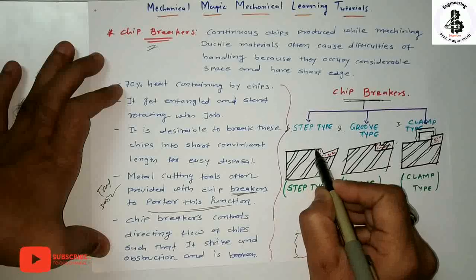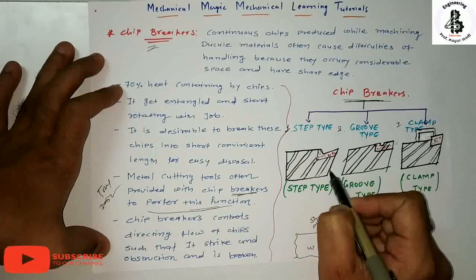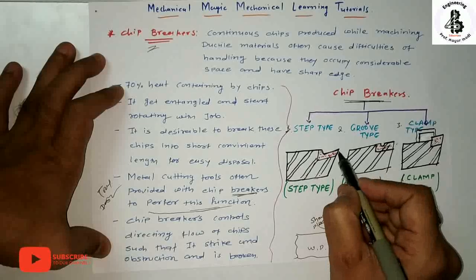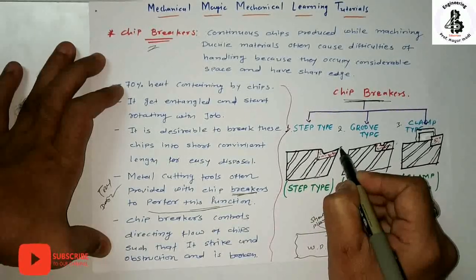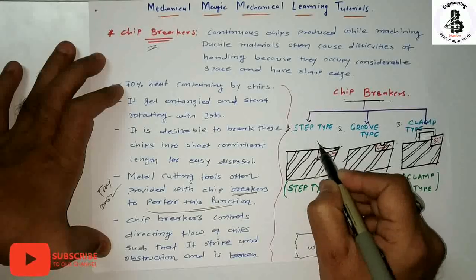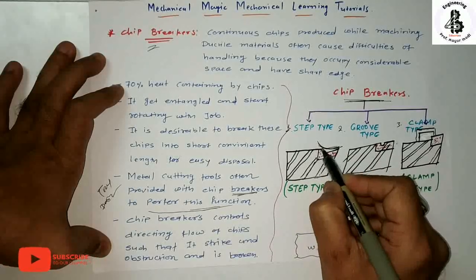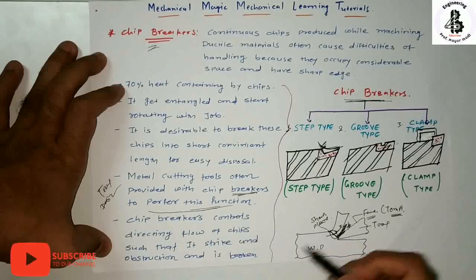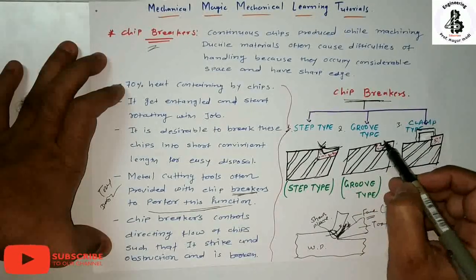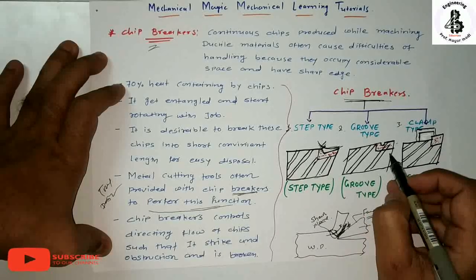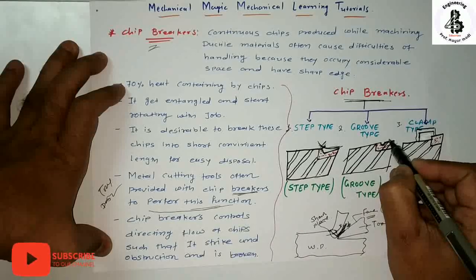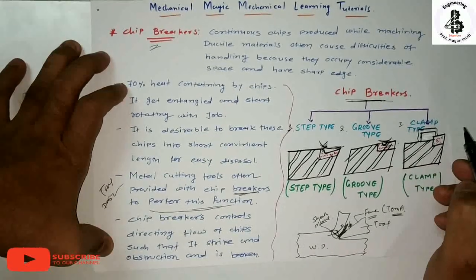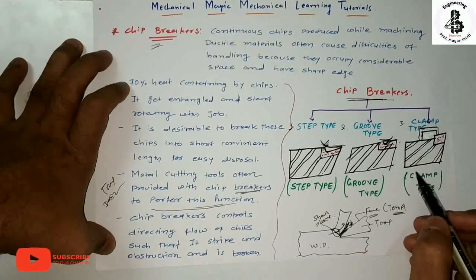For the step type chip breaker, in a single point cutting tool, such a shape is provided on the tip of the tool. One step is provided at the tip of the tool, and by the flowing of the chips over that step, it makes an obstruction to the chip flow and it will break down. The second one is the groove type chip breaker. A groove is provided at the tip of the tool, and by the chips flowing onto that surface, it makes an obstruction and strike, and the chip breaks down.